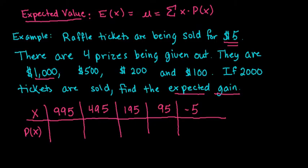Now we want to talk about all of our probabilities. Our probability is the chance of this happening out of the total number of people that are participating in this raffle. For this one, there is only one prize that's being awarded for $1,000. You have a 1 in 2,000 chance of winning $995. For the second prize, it's the same thing, 1 in 2,000. For $195, it's also 1 in 2,000, and for the gain of $95, it's 1 in 2,000.